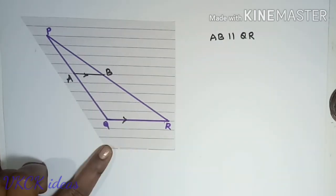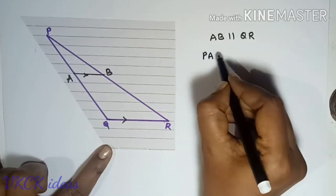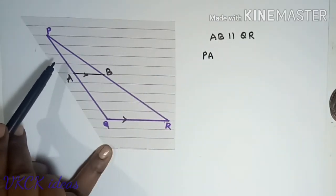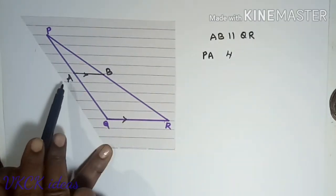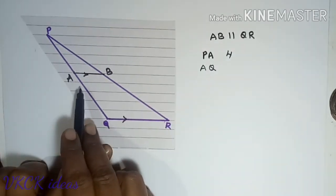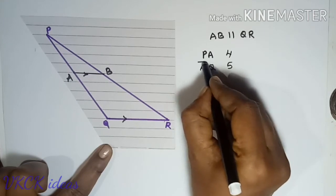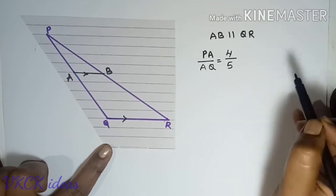Now let us make the observations as we did in the previous case. PA has how many equal parts? 1, 2, 3, 4. And AQ has how many equal parts? 1, 2, 3, 4, 5. Now if I make it a ratio, PA by AQ is 4 by 5.